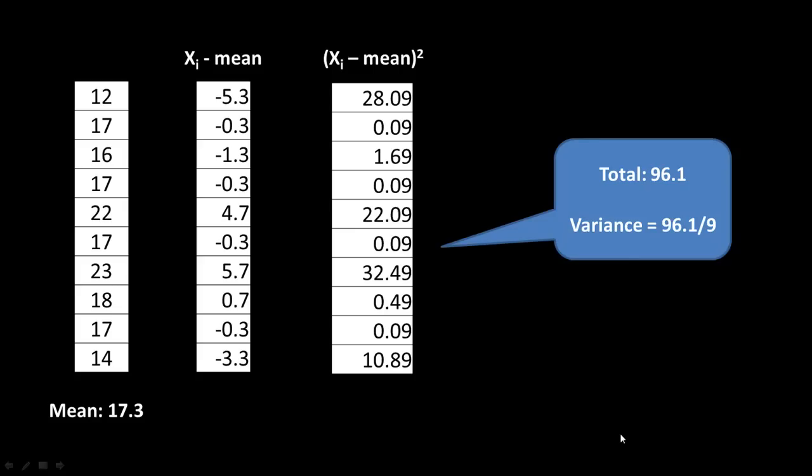You are calculating the variance of the sample, but you are using that as an estimate for the variance of the population. That is why when you have a sample and you calculate the variance, you divide by n-1 and not by n.